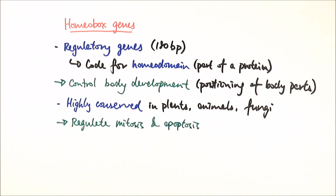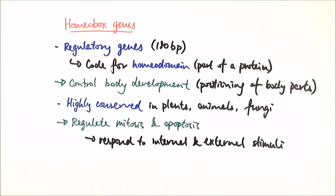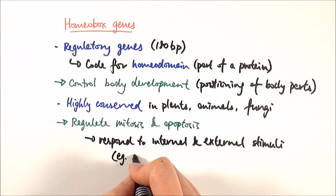As the baby develops in the mother's uterus, those webs are broken down by apoptosis — controlled cell death. Signals are received, lysosomes burst open releasing their contents into the cell, degrading all other molecules within it, and eventually the entire cell disintegrates. Cells undergo apoptosis in response to internal and external stimuli, such as stress.